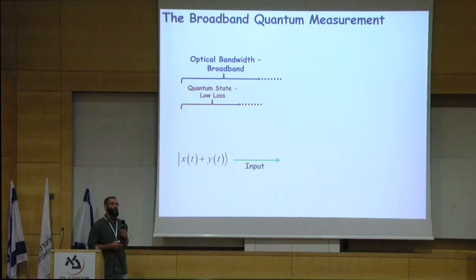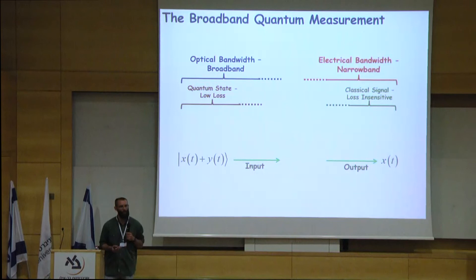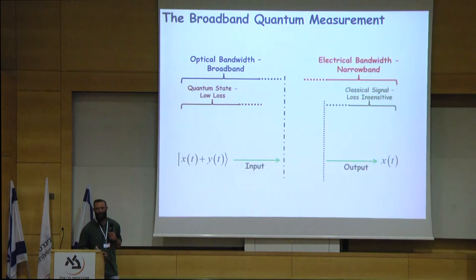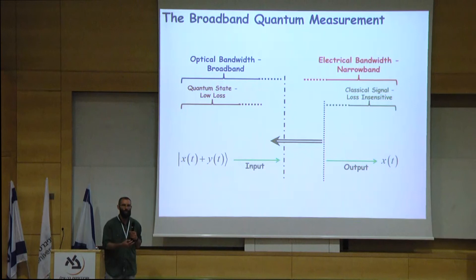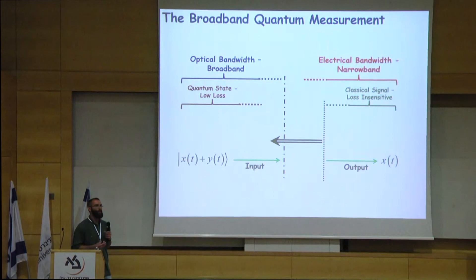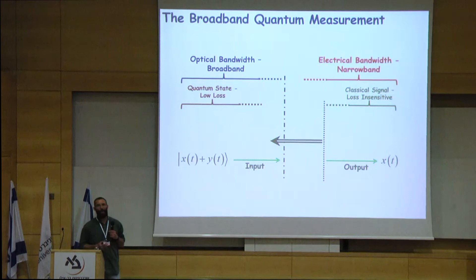Let's take a look at the quantum optical measurement. We start out with quantum information with optical bandwidth and end up with a classical signal with electrical bandwidth. There are two transitions in this process: the first is amplifying the information from the quantum region to the classical region, and the second reduces the bandwidth from optical signal to electrical signal. What we would like is for the quantum-to-classical transition to be as early as possible, so that we do not suffer from any loss, but the bandwidth reduction only right before the detection, as far right as possible.